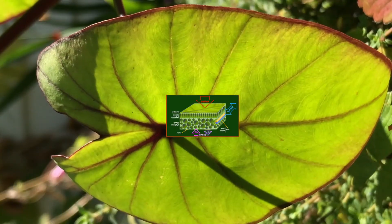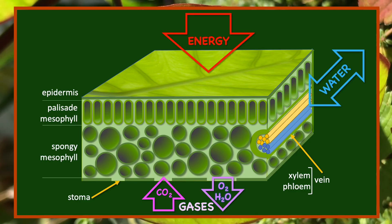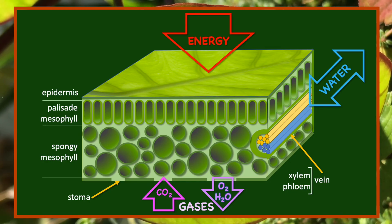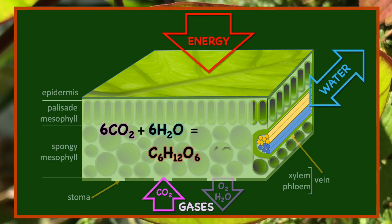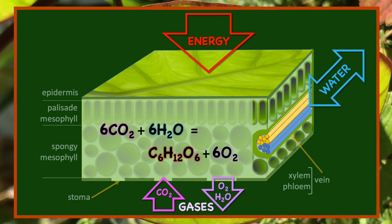In a leaf, chloroplasts near the upper surface capture energy from the sun. The lower leaf surface contains pores called stoma that allow gases to flow in and out, and veins bring water from the roots to the leaves. Sunlight drives the chemical reaction between water and carbon dioxide that produces carbohydrates like glucose. The remaining oxygen exits the leaf through the stoma, and the carbohydrates move through the vein system, building the biomass of the tree.